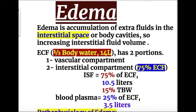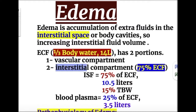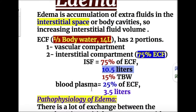Edema is accumulation of extra fluid in the interstitial space or body cavity, increasing the interstitial fluid volume. The extracellular fluid contains one-third of body water, about 14 liters, while two-thirds is intracellular, about 28 liters. The extracellular fluid has two portions: the vascular compartment and the interstitial compartment. The interstitial compartment comprises 75% of extracellular fluid (~10.5 liters) and blood plasma contains 25% (~3.5 liters).